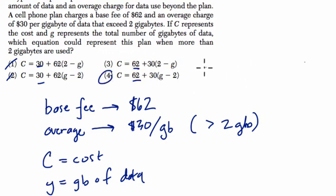So my thing is that the answer is choice 4 because, you see, this is 30 times G minus 2. This makes sense because we have to use, G has to be, here, G has to be larger than 2 gigabytes. So just imagine for a second we use 3 gigabytes. So our cost would be what?